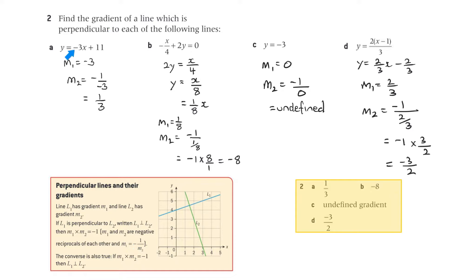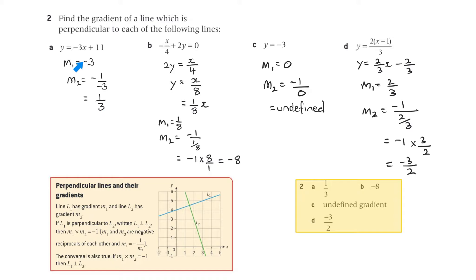For the first line y equals minus 3x plus 11, m1 is minus 3. Using m2 equals minus 1 on m1, that's minus 1 over minus 3, which equals 1 third. So the gradient of a line perpendicular to a line with gradient minus 3 is 1 on 3.